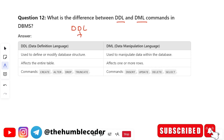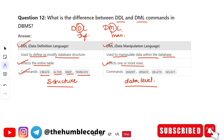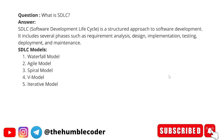Next question: What is the difference between DDL and DML commands in DBMS? DDL stands for Data Definition Language and DML stands for Data Manipulation Language. DDL is used to define or modify database structure, whereas DML is used to manipulate data within the database. DDL affects the entire table structure, while DML affects one or more rows. Commands in DDL are CREATE, ALTER, DROP, and TRUNCATE, whereas commands in DML are INSERT, UPDATE, DELETE, and SELECT.